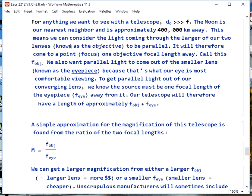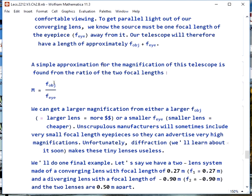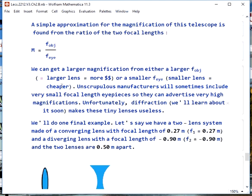That means we consider we have parallel light coming through the larger lens, the objective, and that means it will come to a point one objective focal length away. We also want to get parallel light out of the smaller lens, which we call the eyepiece, because that's what's most comfortable for your eye to see. That's what you're walking around in outside. To get parallel light out of an eyepiece, we need to stay one focal length away from the source. The telescope is therefore going to have a length pretty close to the sum of the focal lengths of the two lenses. We can approximate the magnification by looking at the ratio of the focal lengths. This shows that if we want larger magnification, we need either a larger focal length of the objective. This generally means larger diameter, which always means larger cost, or a smaller focal length for the eyepiece. This looks like the way to go. It's a smaller lens. It's cheaper.